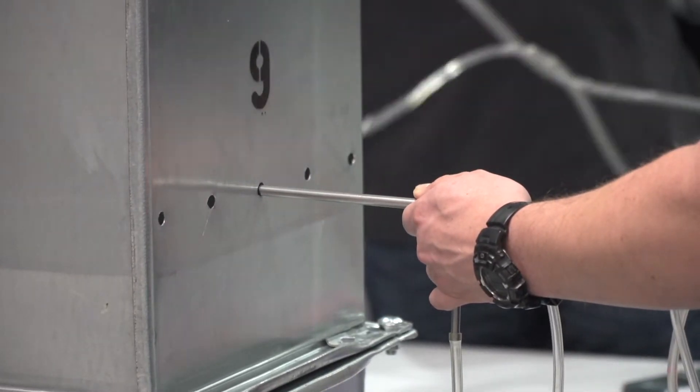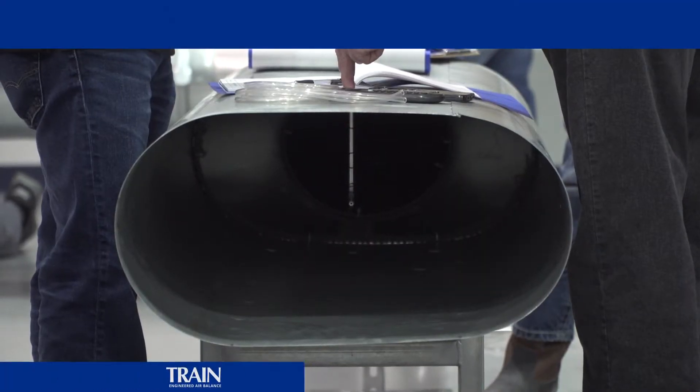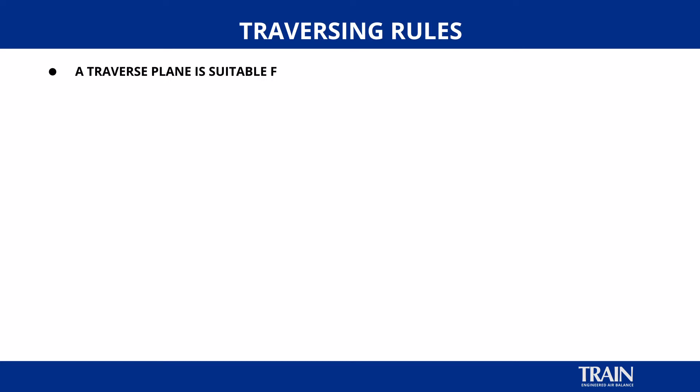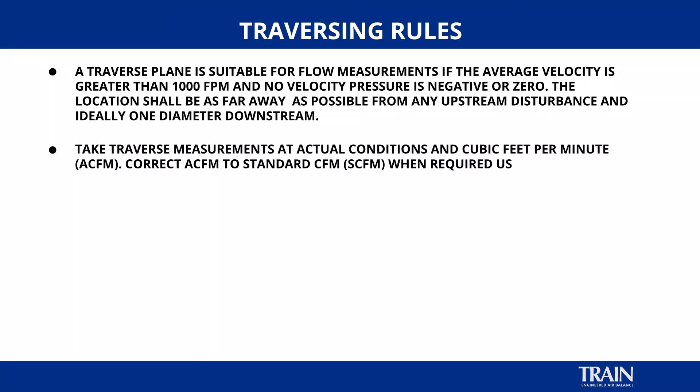There are several important rules when picking a location for conducting a traverse. In order to maintain a location that's going to contain the best chances for uniform flow, a traverse plane should be located as far away from an upstream disturbance as possible, and ideally at least one diameter downstream from a disturbance. A traverse plane is also suitable for flow measurements if the average velocity is greater than 1,000 feet per minute and no velocity pressure is negative or zero. Take traverse measurements at actual conditions in actual cubic feet per minute. If the traverse location is not at standard air conditions, a velocity correction may be required.